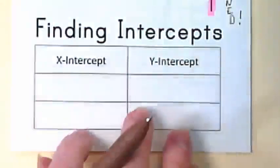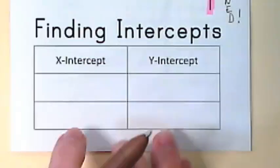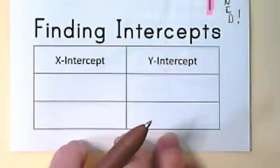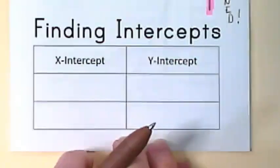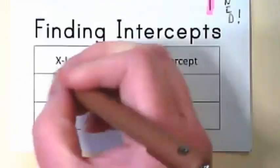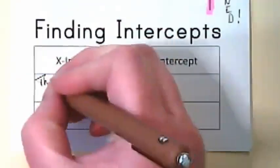Again, we have not learned this yet, but we will be using this over the next few weeks. Intercepts are places on the graph where the line you're drawing crosses one of the axes.